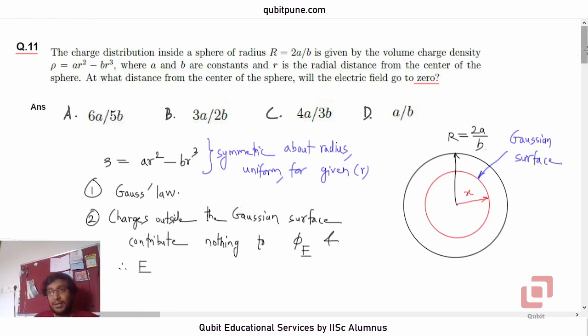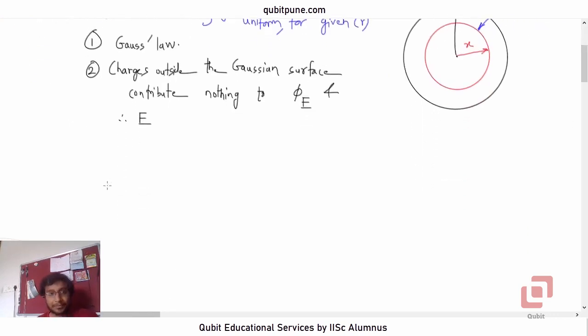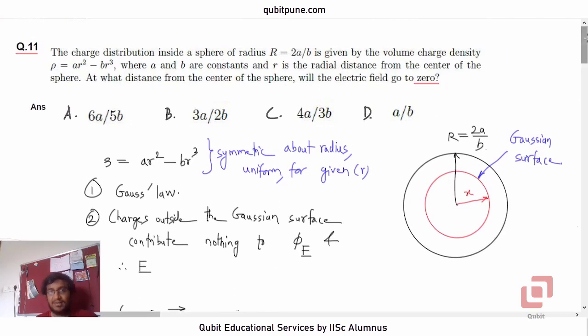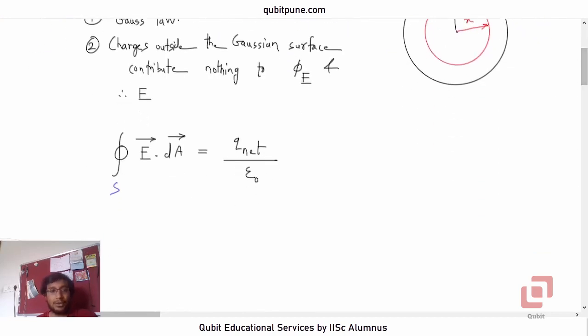Now let us recall the statement of Gauss law. Gauss law tells that the surface integral of the electric flux is equal to net charge enclosed divided by the permittivity of free space ε₀, assuming that it is kept in vacuum. This is our Gauss law.